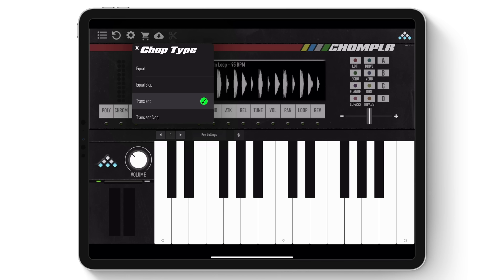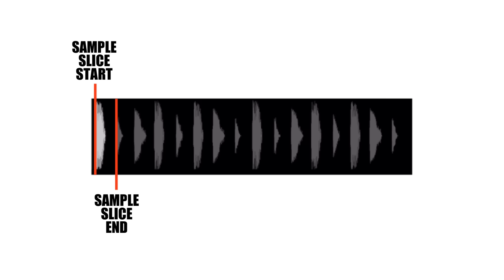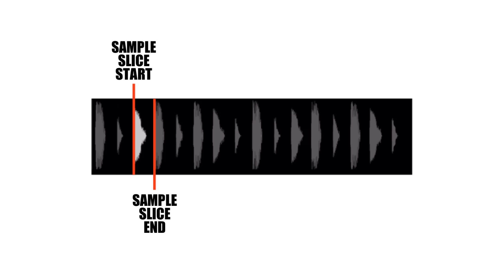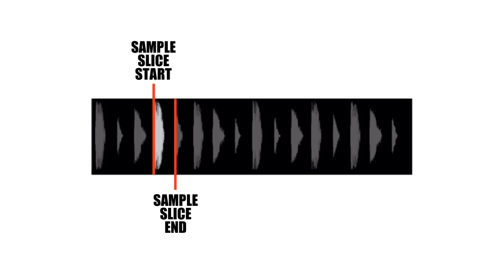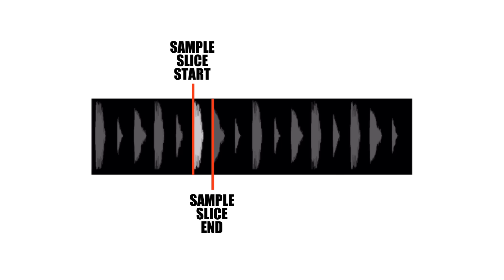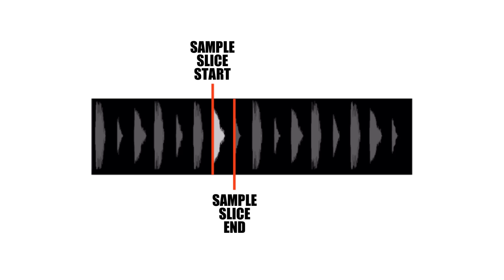Transient slices the sample at detected transients for the start points, which is useful for isolating drum hits. For example, I've loaded a drum loop and selected Transient. The drum hits were quickly detected and ready for use. Each slice can be manually edited if required.